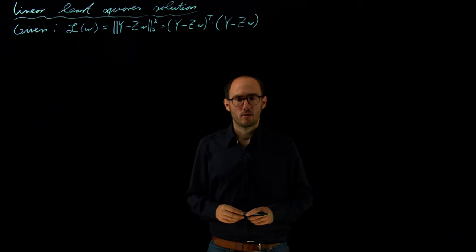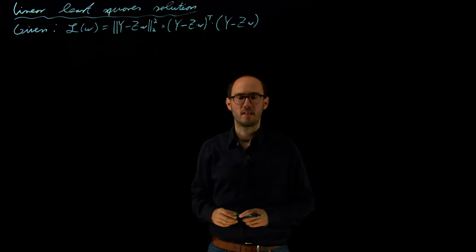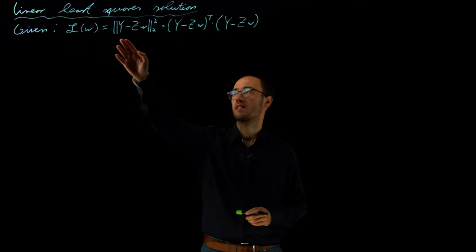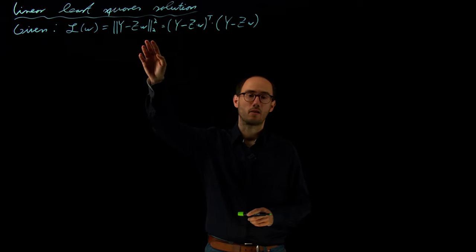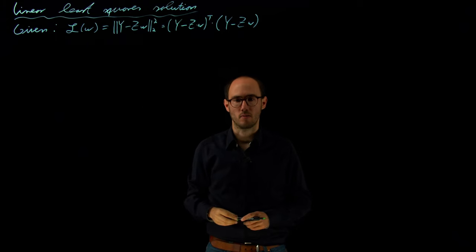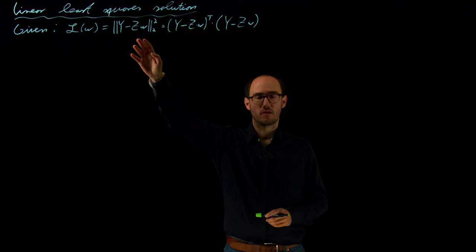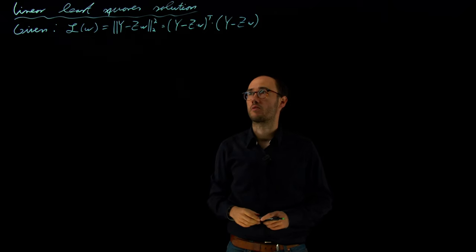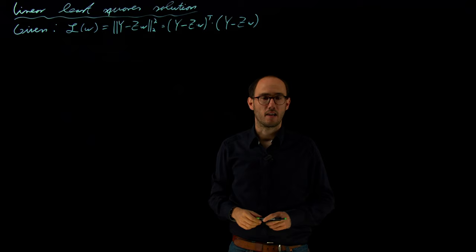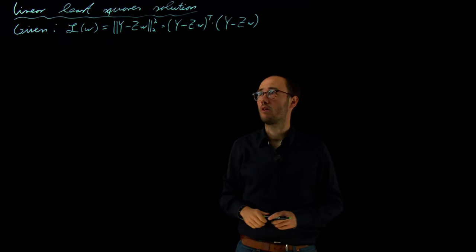In this video we are going to solve the least squares problem for a linear model. From the previous lecture we have already introduced the least squares loss for the linear model, which is the quadratic Euclidean distance between the outputs y and the model predictions, which are the regressor matrix times w, the parameter vector. We can represent this squared Euclidean loss as y minus z times w transpose times y minus z times w.